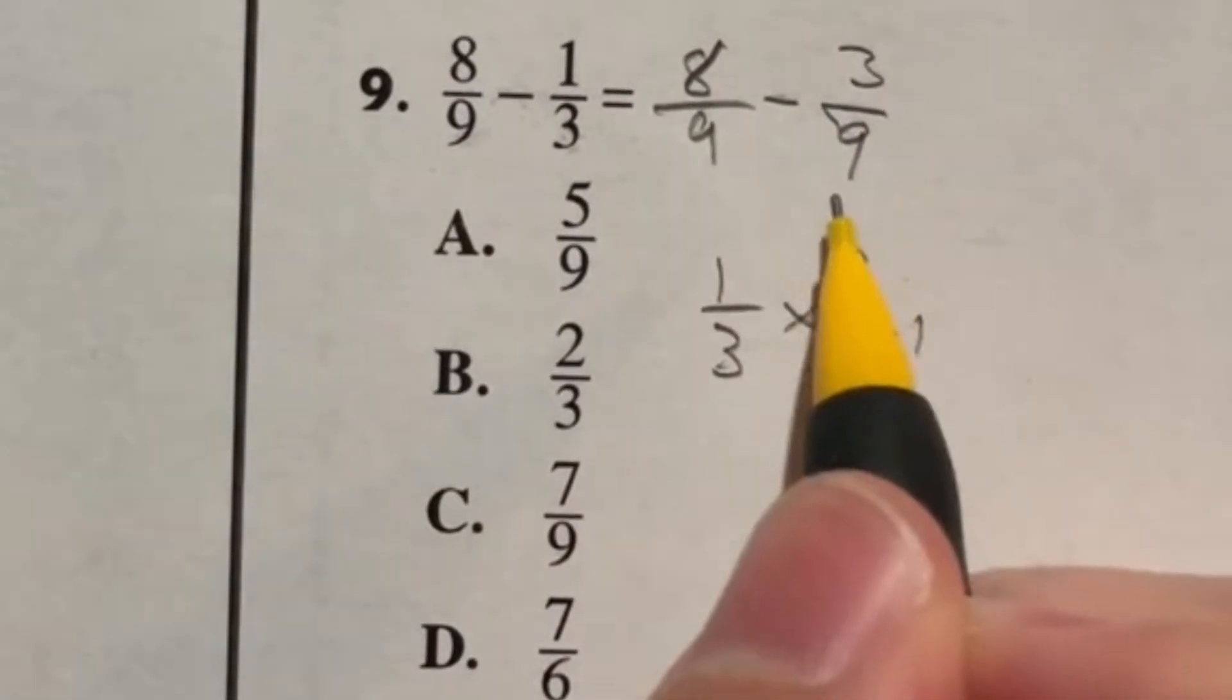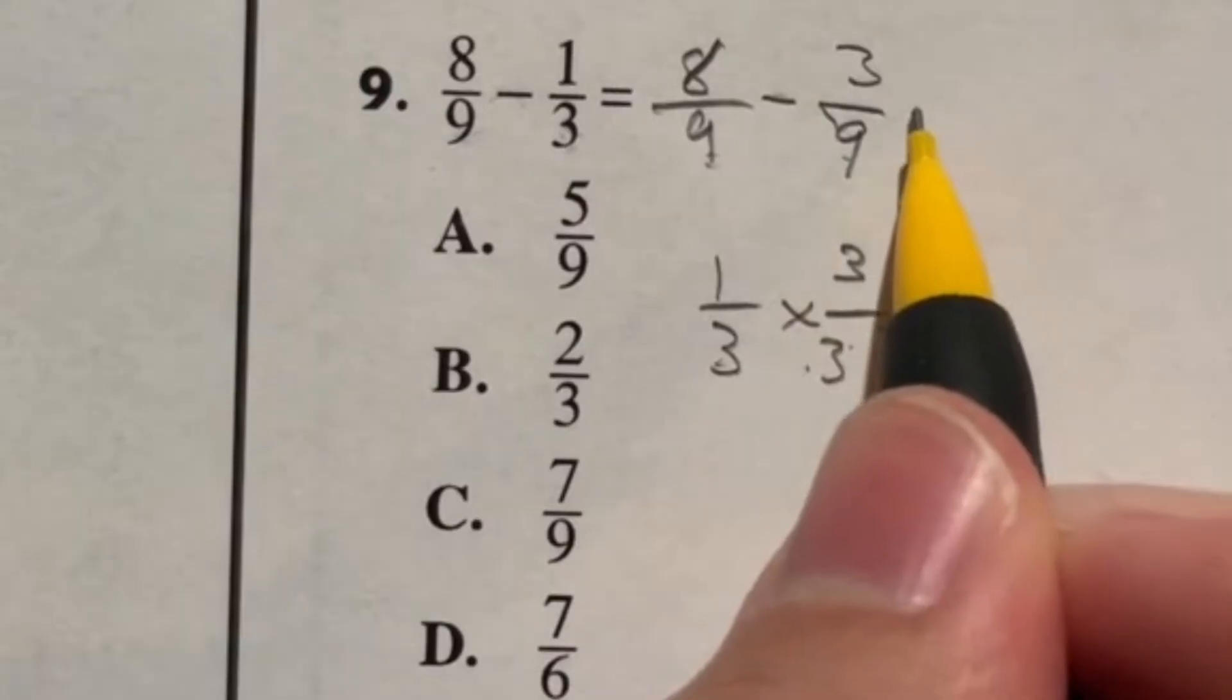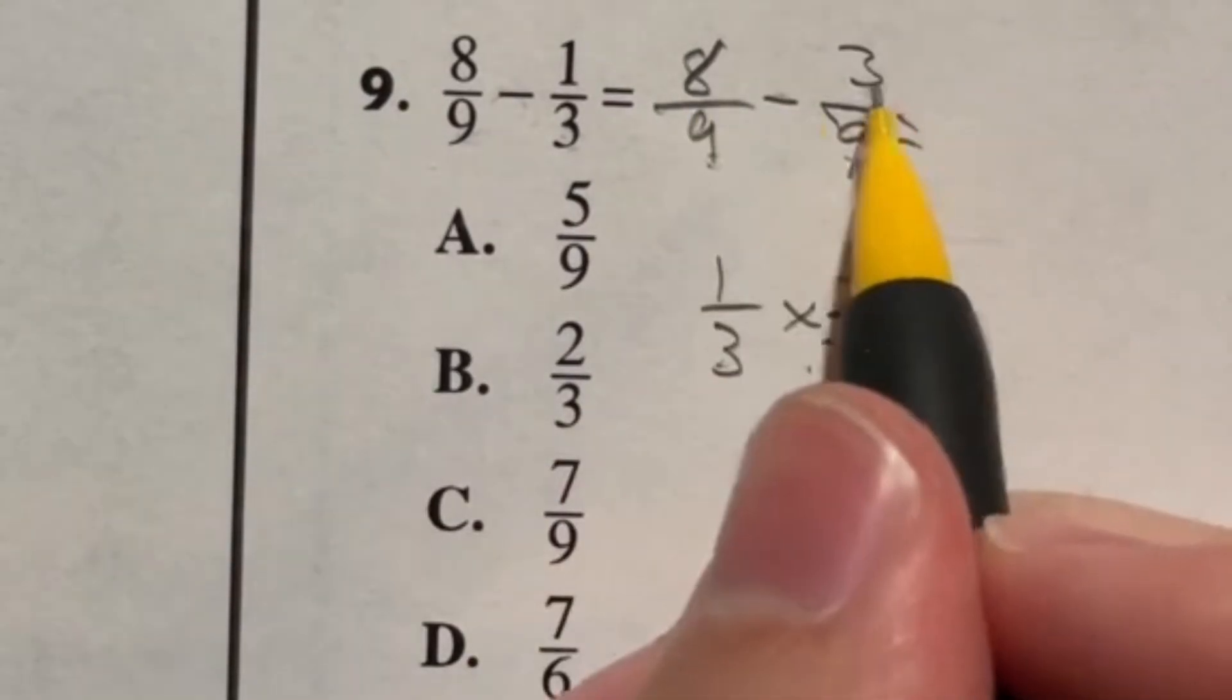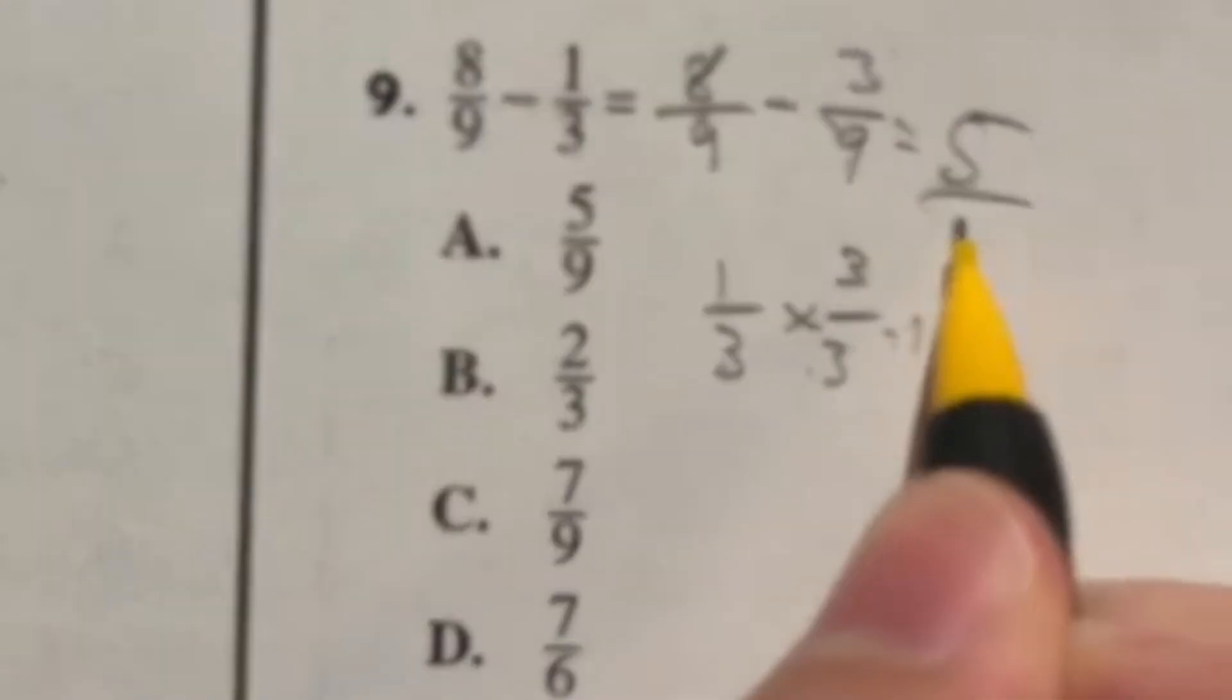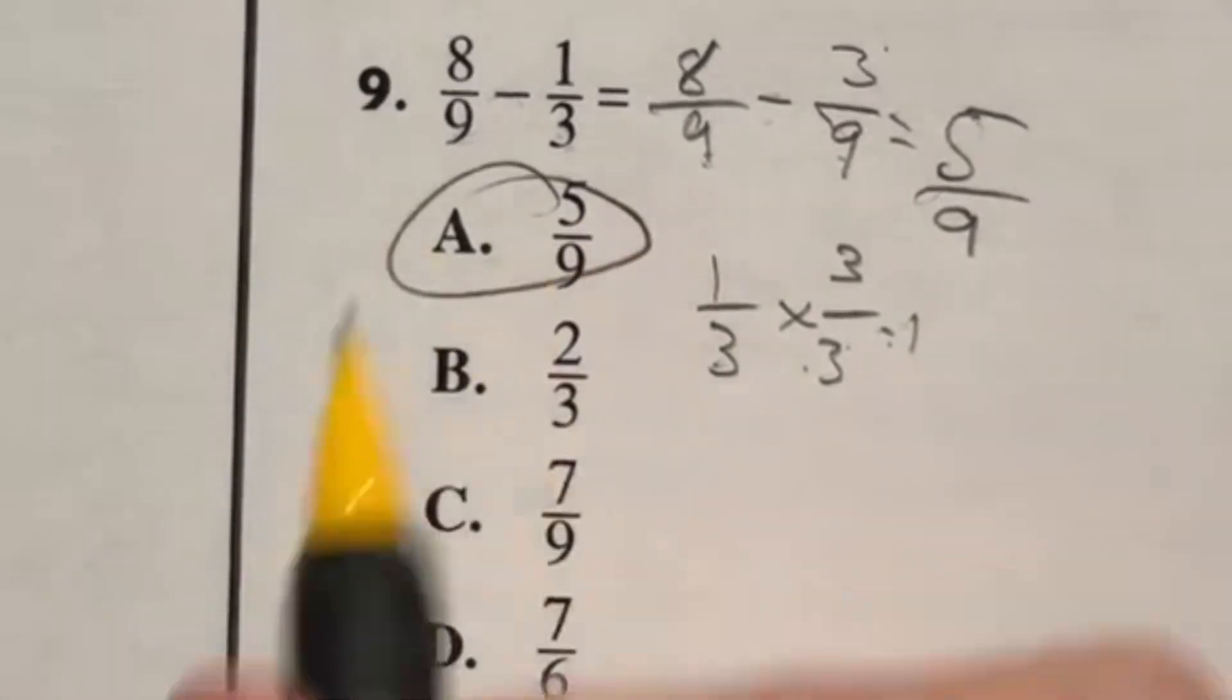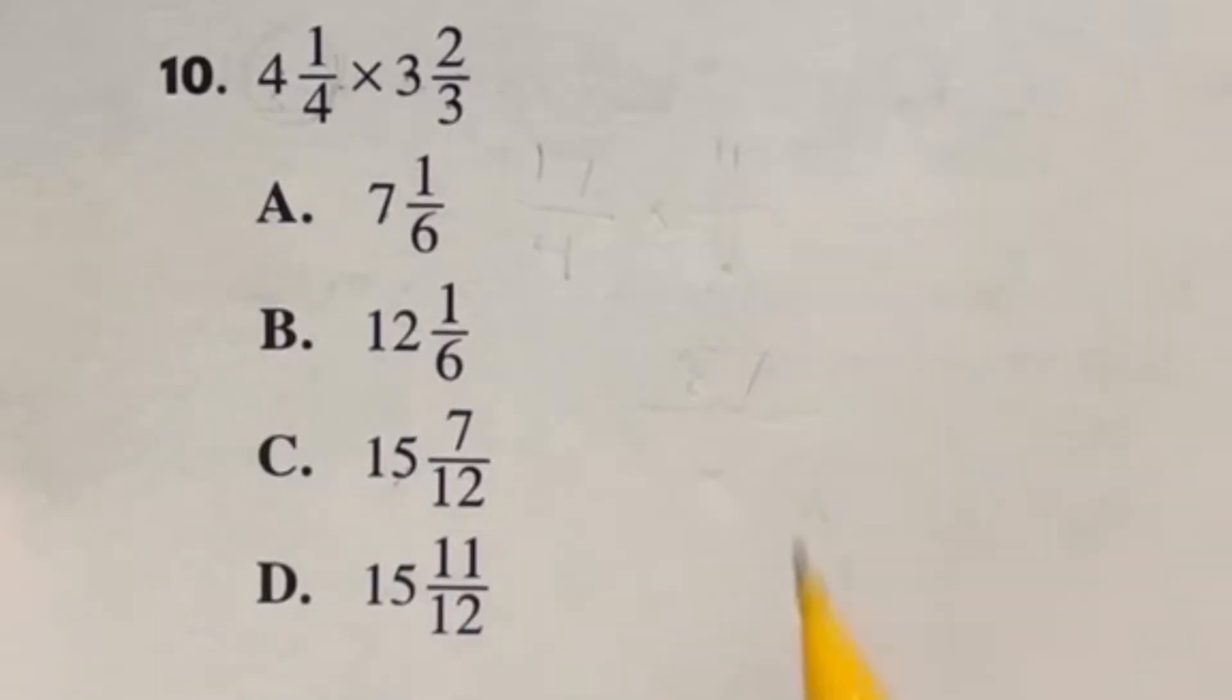Remember, we're subtracting the two of these. So now that we have the same number on the bottom, we can just subtract across the top. Eight minus three is going to give me five, meaning that our final answer here is five over nine, which is answer E.